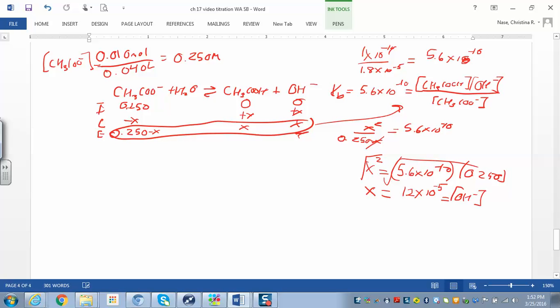So when we have a weak base problem, we have to solve it for a pOH first. pOH is going to be negative log of 1.2 times 10 to the negative 5. So the pOH ends up being 4.93. And then to get the pH out of that, I'm just going to do 14 minus this, which gives us 9.07.